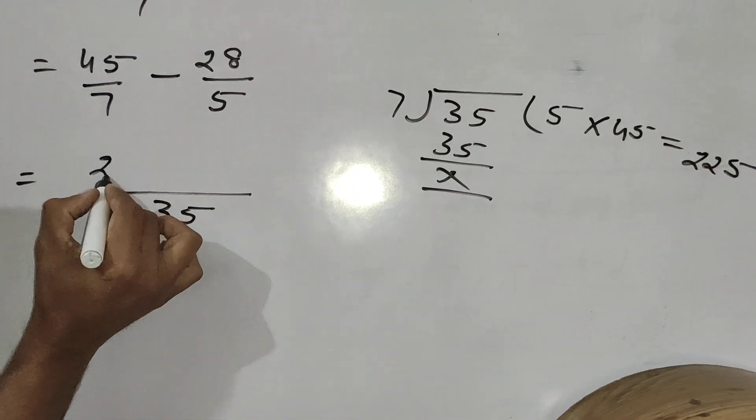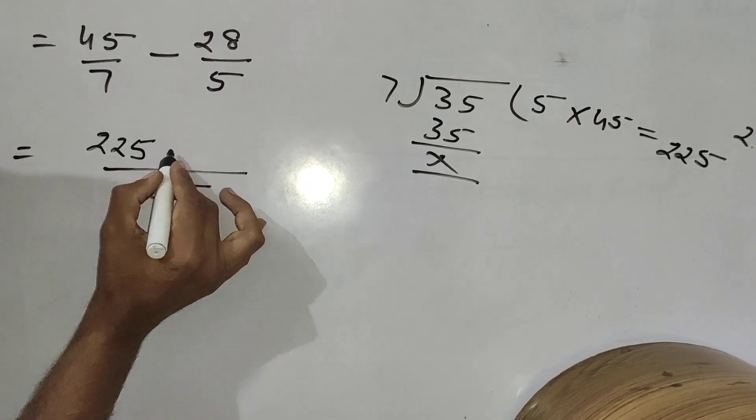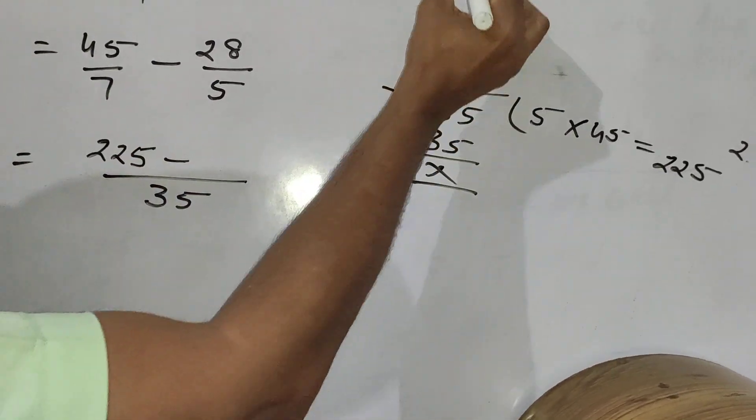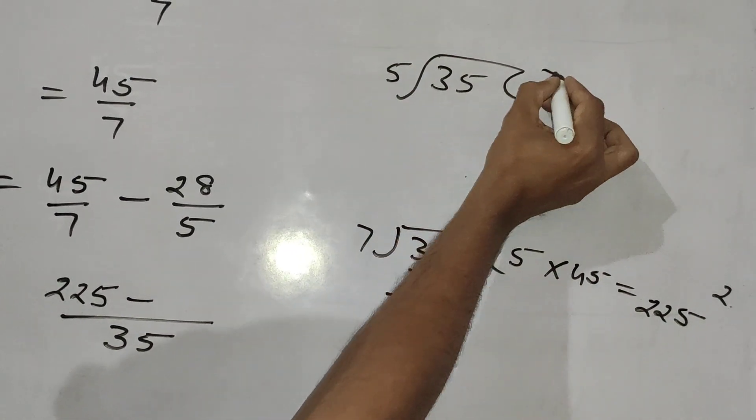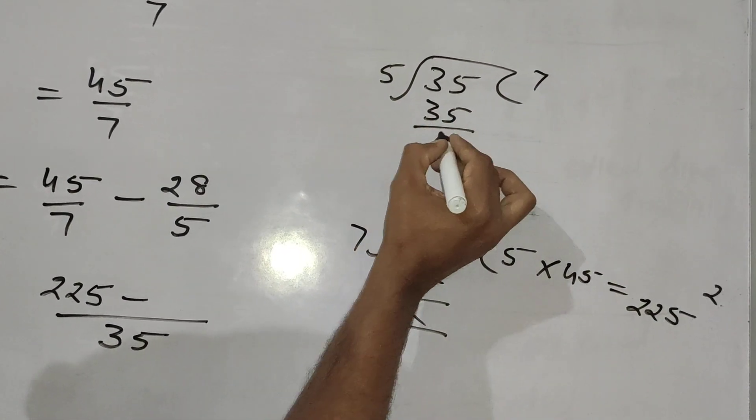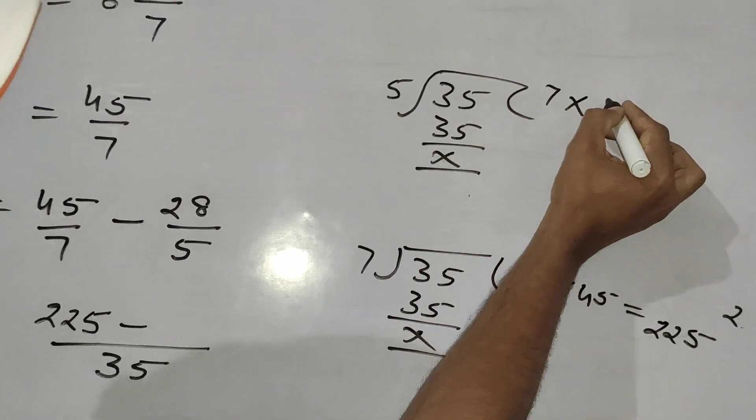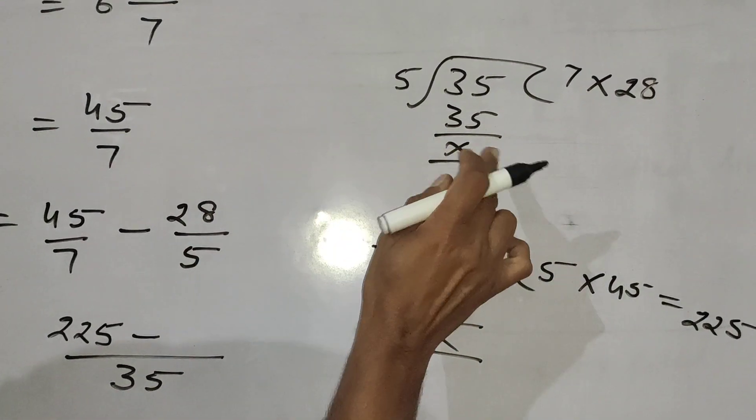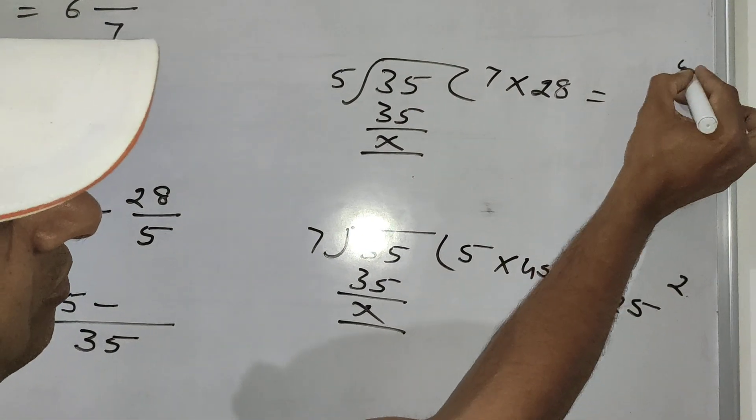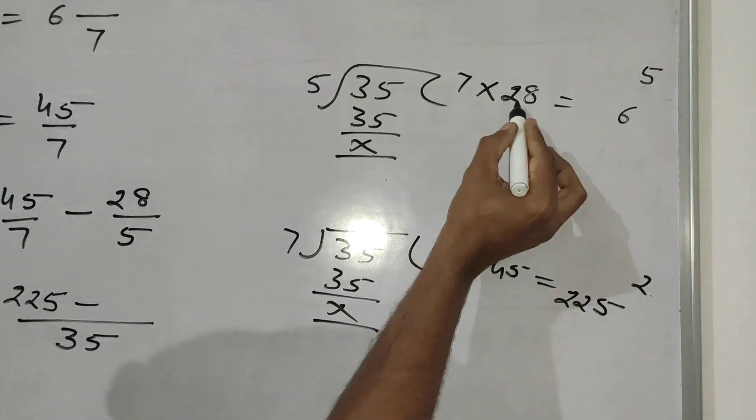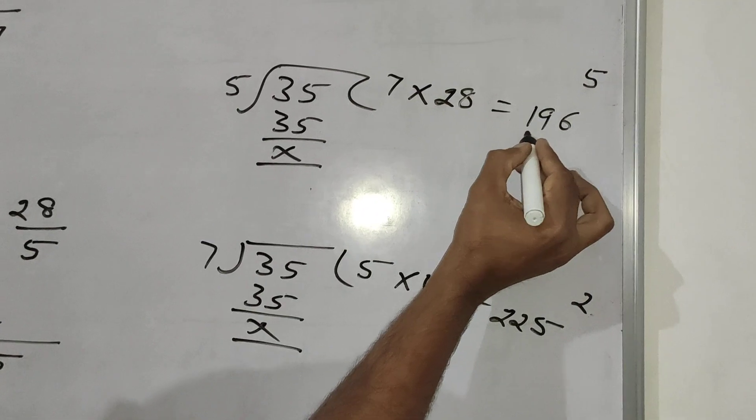Then 22, 22, 225 minus, now divide 35 by 5. 5, 7, 35. Then X 7 into 28. 7, 8 is equal to 56. 5 carry. 7 to the 14 plus 5, 19, 196.